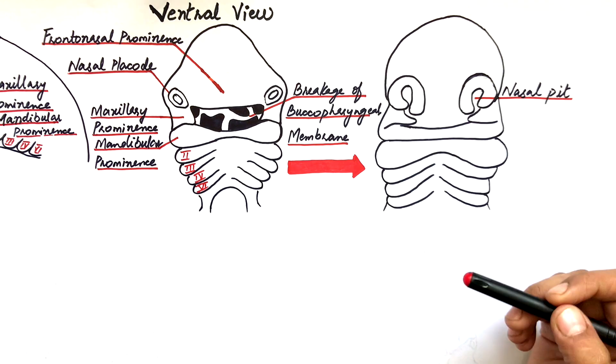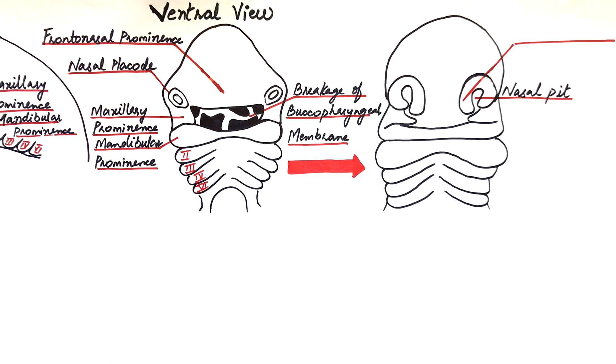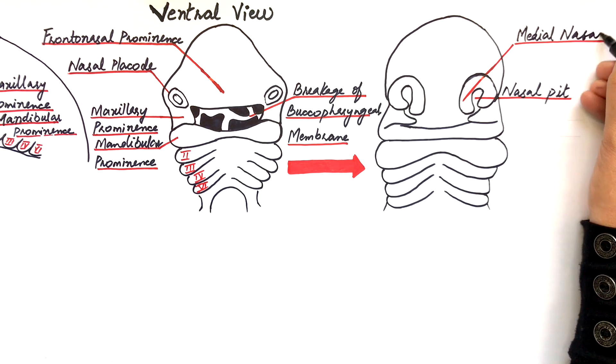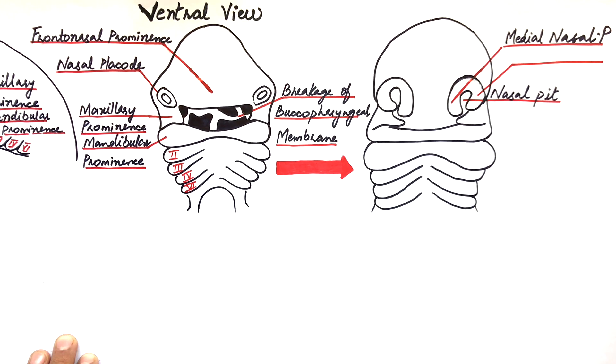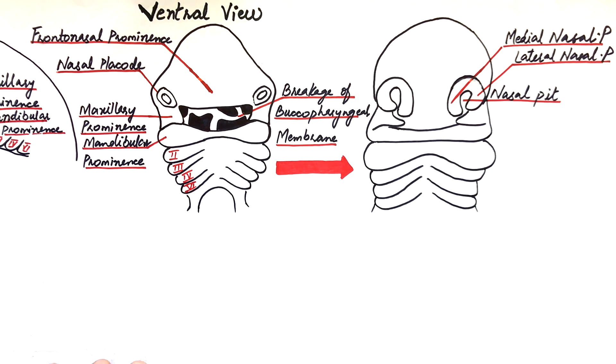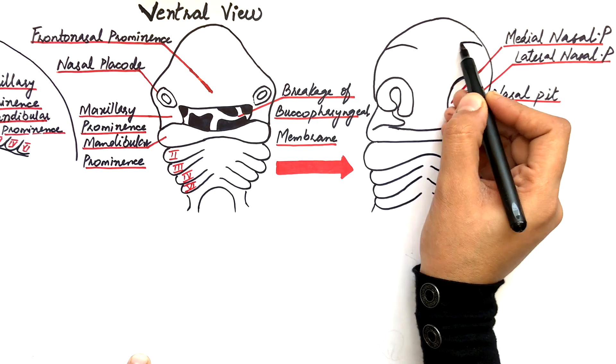The bulging of the tissue at the medial sides of these nasal pits are called medial nasal processes, and at its lateral sides are called the lateral nasal processes. The frontonasal prominence along with the medial nasal prominence will give rise to the middle portion of the nose, the upper lip, and the primary palate.